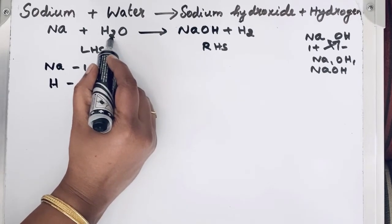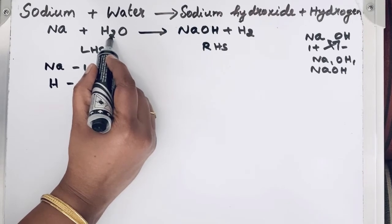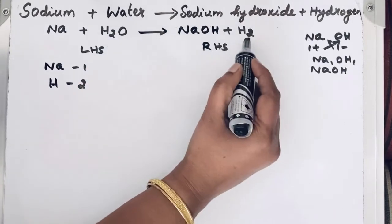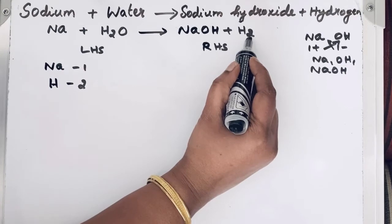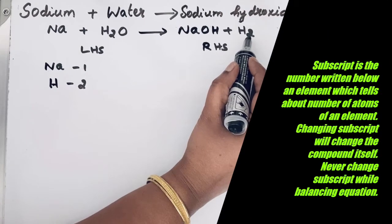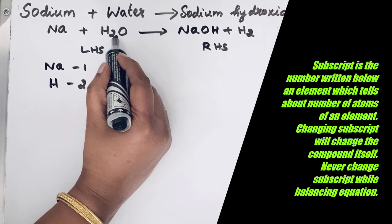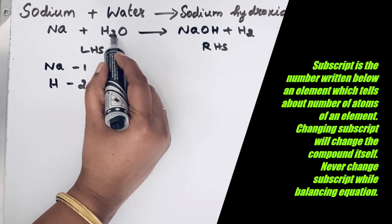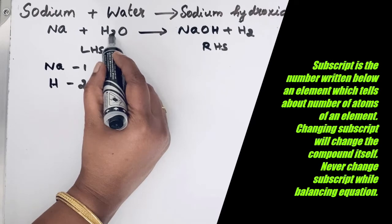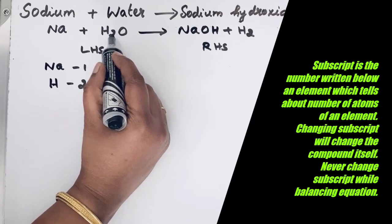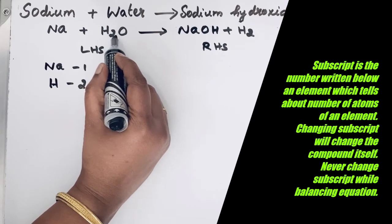See, listen here. There is a number written down in H2O for hydrogen down. Here also for hydrogen, here we have 2. So this is subscript. It tells about the number of atoms in a compound or in a molecule. So remember that you do not change the subscript for balancing the reactions.